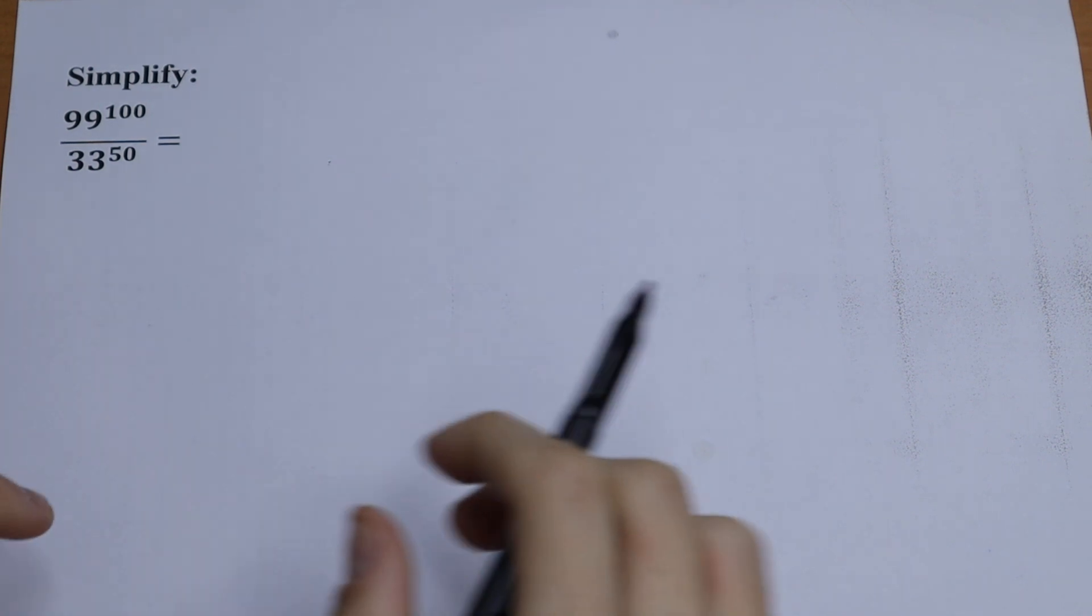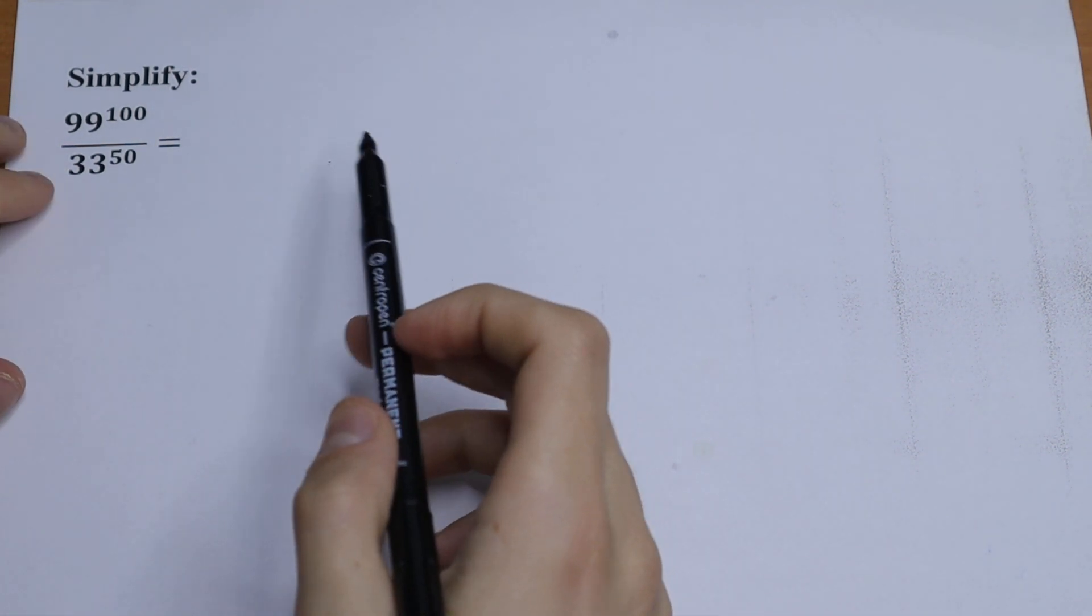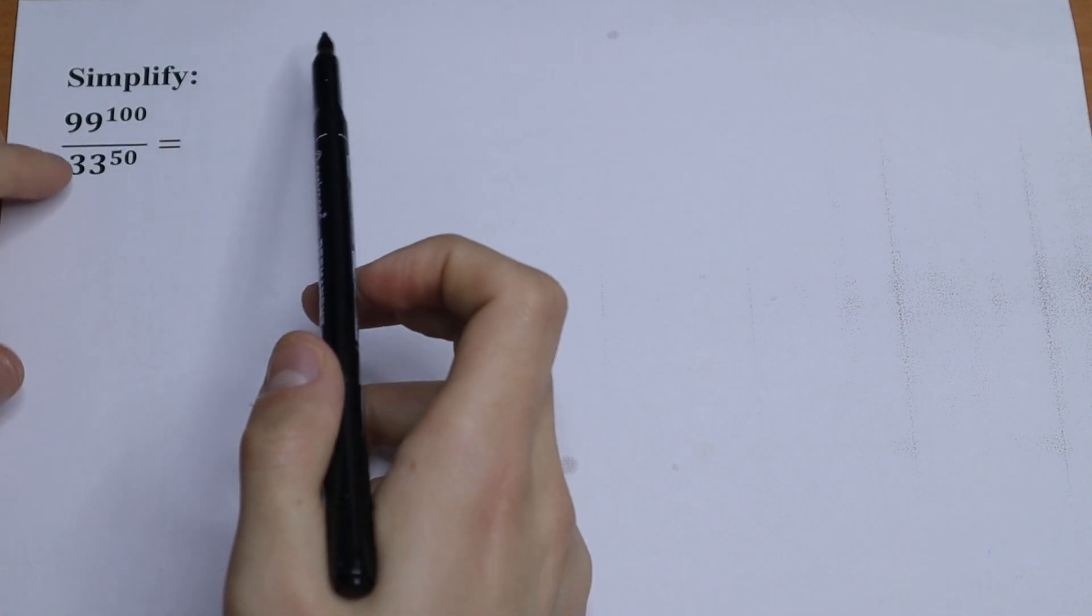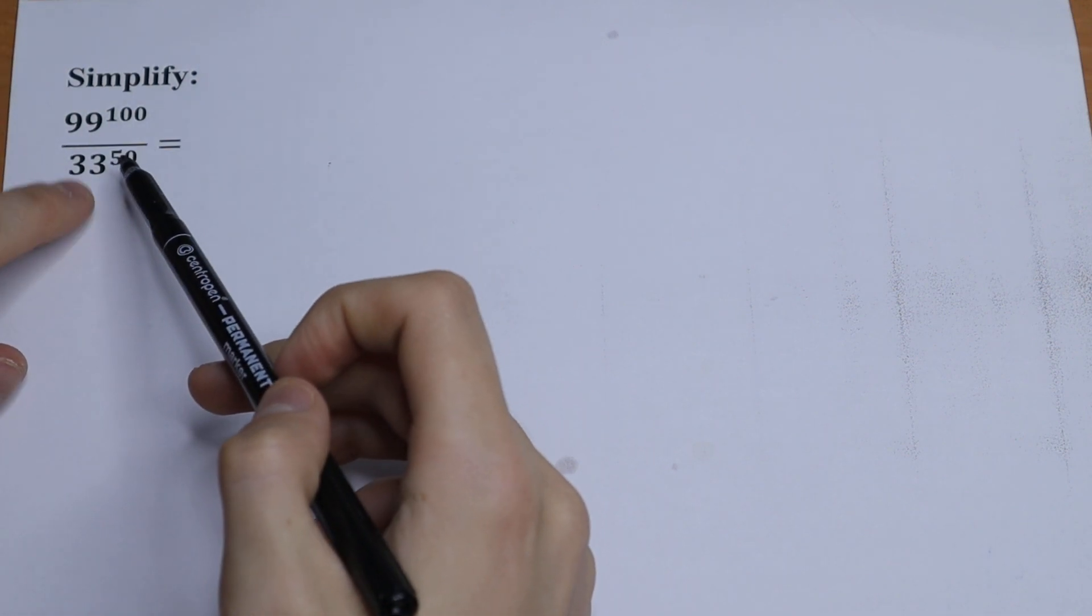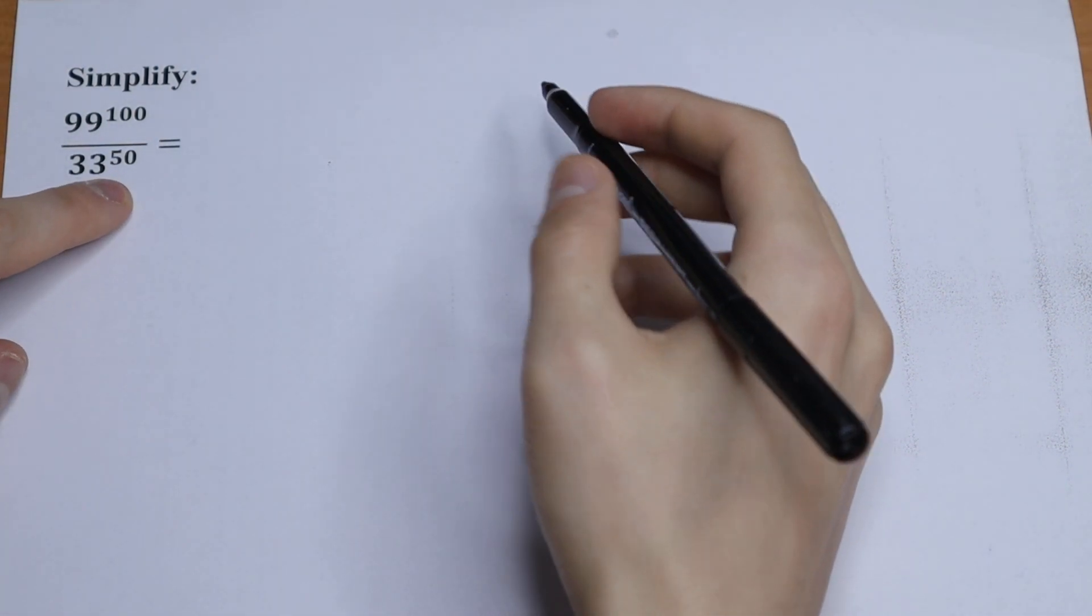Hello everyone, welcome back to Mathmo. Today we have an interesting algebra problem. We need to simplify this. We have 99 to the power 100 over 33 to the power 50. How can you solve this?